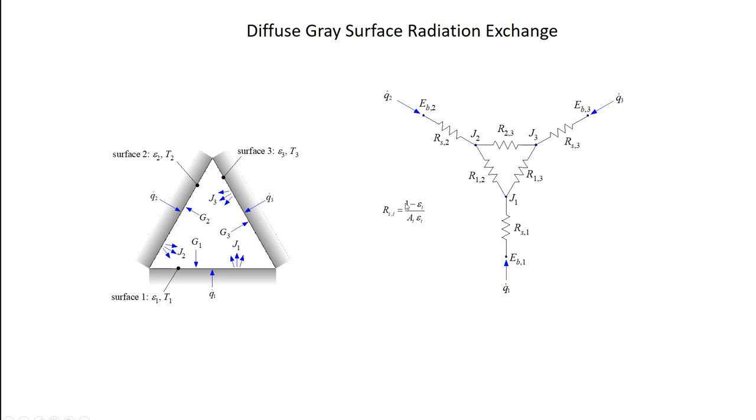Hopefully that's clear. A couple things to point out here. One thing that I hope is obvious is that if I'm dealing with black surfaces and I look at the value of this surface resistance, I have 1 minus - a black surface has emissivity of 1. The surface resistance goes to 0.